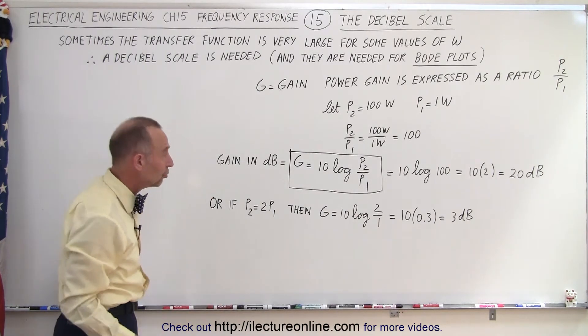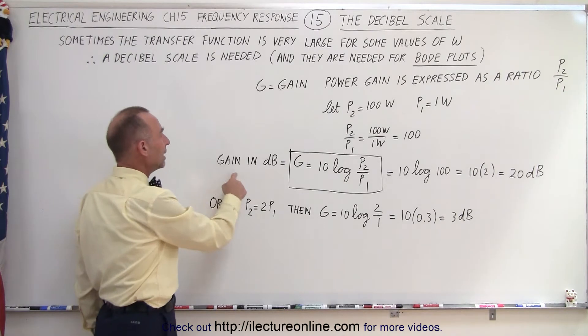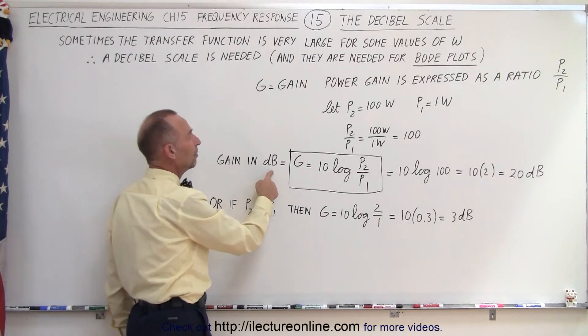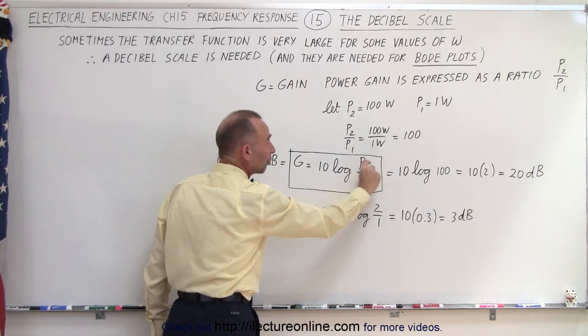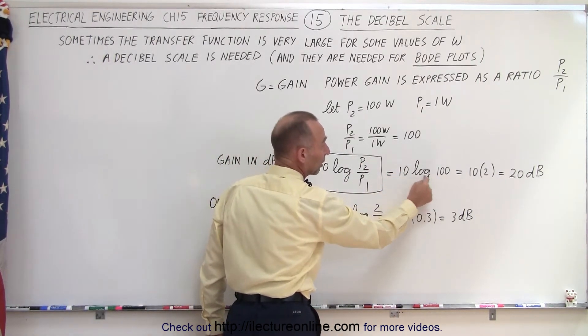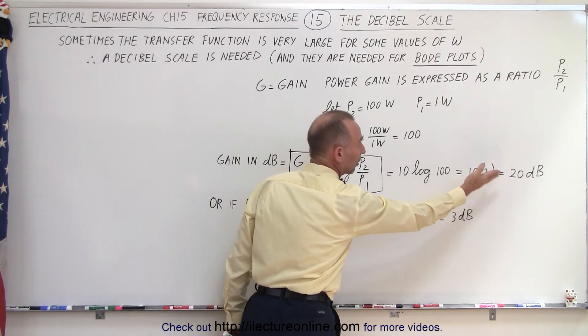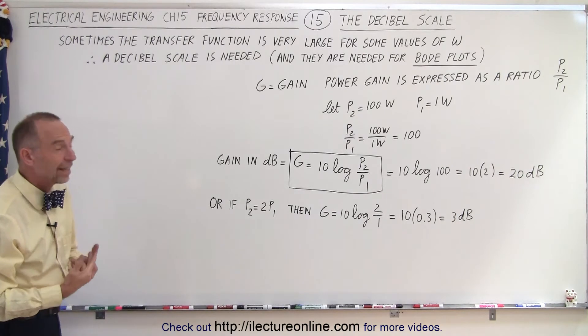Well, the gain in dB by definition is equal to 10 times the log base 10 of the power ratio. So that would be 10 times the log of 100, and the log of 100 is equal to 2, so that would be 20 decibels. In other words, that would be a 20 decibel gain.